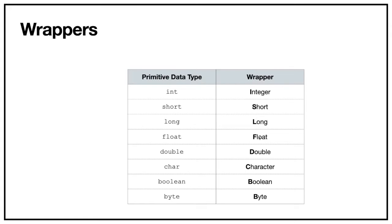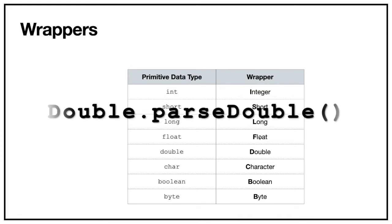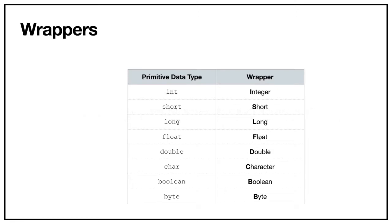For command line arguments, you'll need data type wrappers. Wrappers are objects that transform a string into a specific data type. Looking at the eight primitive types: if you want an int, use Integer with capital I; for double, use Double with capital D; for char, use Character. These are called wrappers and they require a string that you're going to translate into a data type.